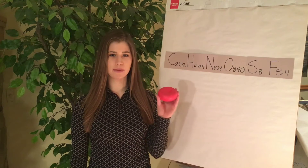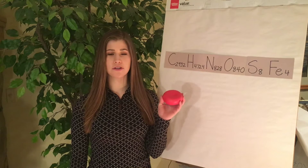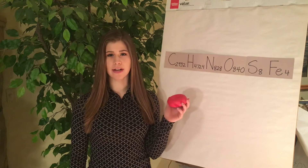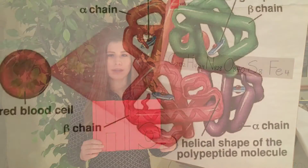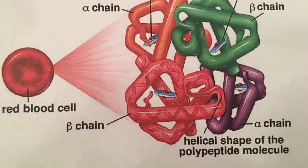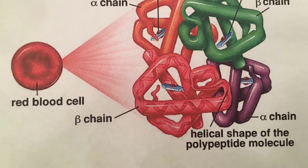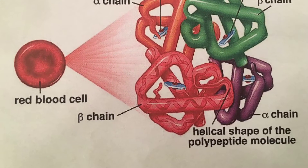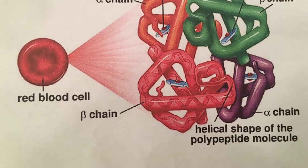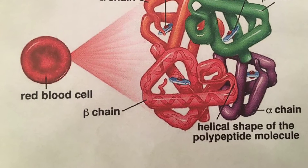Hemoglobin is a protein found in every red blood cell that is responsible for carrying oxygen through the bloodstream, symbolized by Hb. It is made up of four protein molecules: two alpha globulin chains and two beta globulin chains.